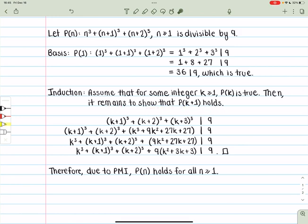So we take our P(n) and we substitute k+1 for all the n's. So notice how we have our (k+1)³, that's here. We have our (k+2)³, that's here. So all that's really left to touch is this (k+3)³.